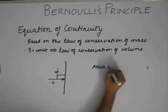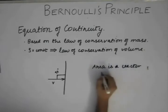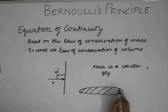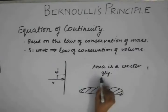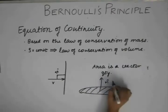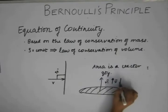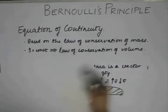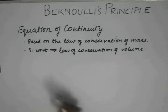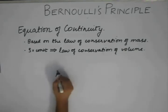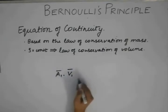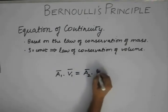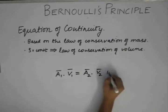As we all know, area is a vector quantity. Any surface with a definite area is always associated with a normal vector to it. So the velocity will either be parallel or anti-parallel to this normal vector. Therefore, the equation of continuity can also be stated in vectorial form as a1 dot v1 equals a2 dot v2.